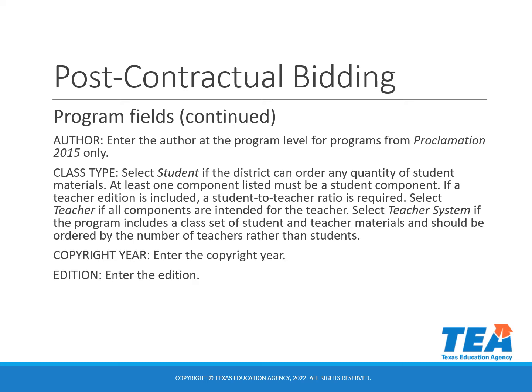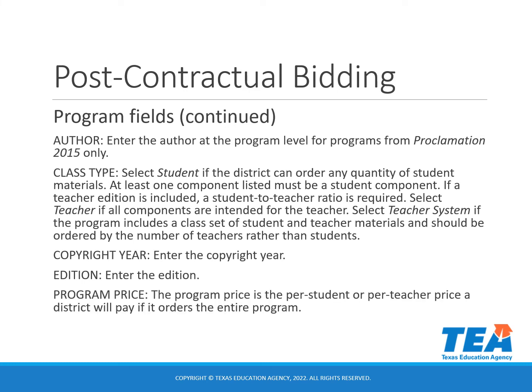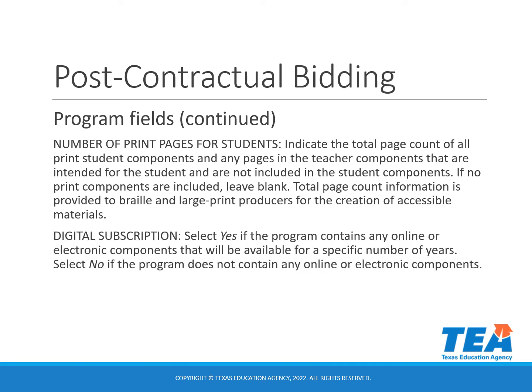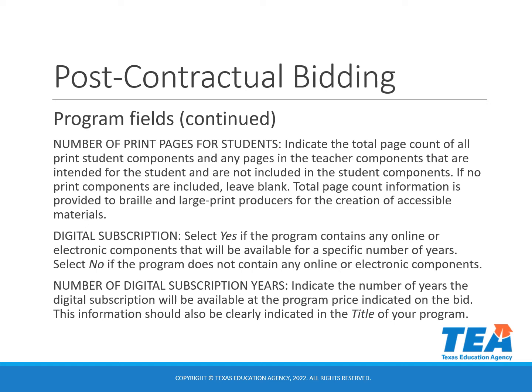You will enter the copyright year and the edition. For the program price, you will enter the per-student or per-teacher price that a district will pay if it orders the entire program. The number of print pages for students field will indicate the total page count for all print student components and any pages in the teacher components intended for the student; if no print components are included, leave this blank. For digital subscriptions, select yes if the program contains any online or electronic components available for a specific number of years, or no if it does not. Then indicate the number of years the digital subscription will be available at the program price — this information should also be clearly indicated in the title of your program.